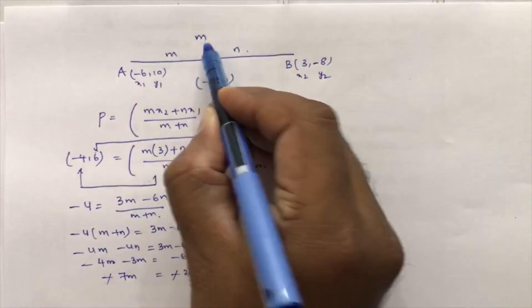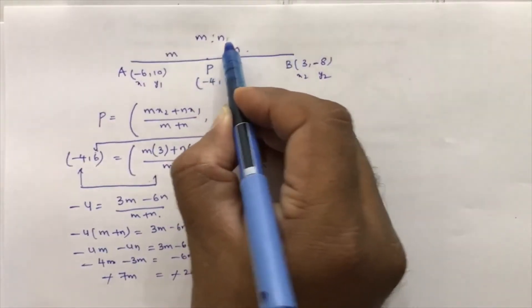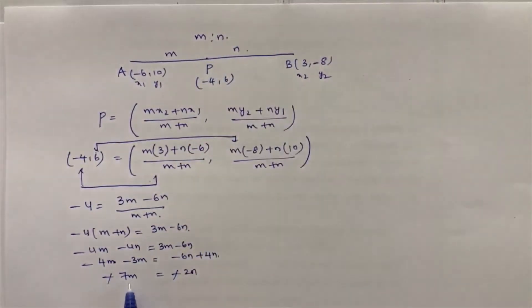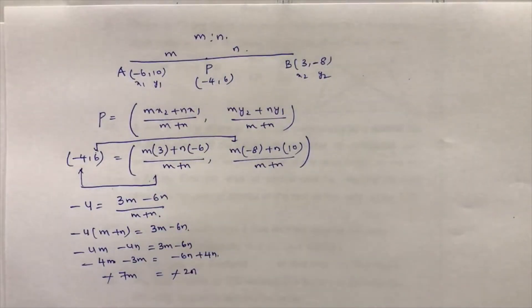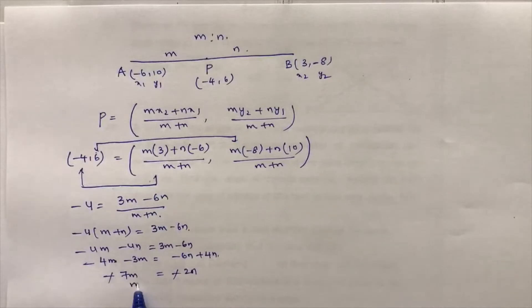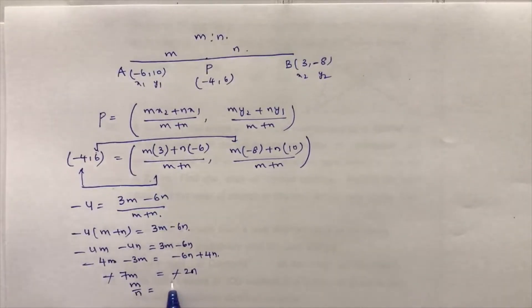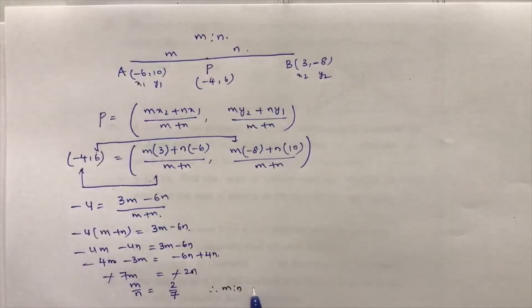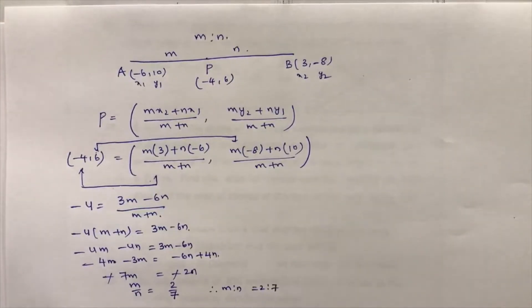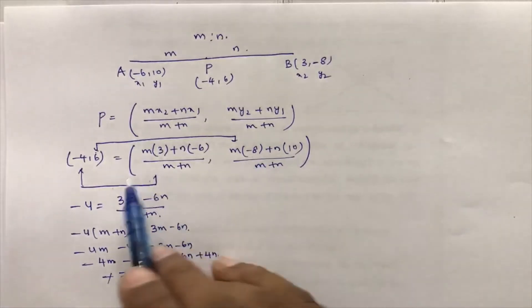We need to find m is to n. Many students get confused and write 7 is to 2, but m is to n is the same as m/n. So m/n = 2/7, therefore the ratio m is to n is 2 is to 7. You can verify this by equating the ordinate as well and you will get the same answer.